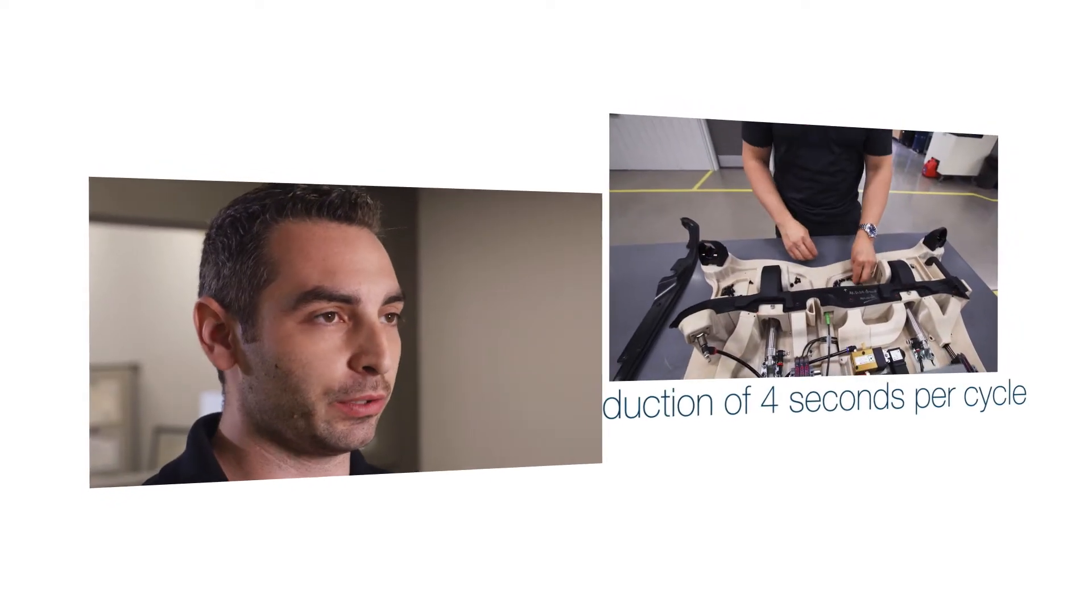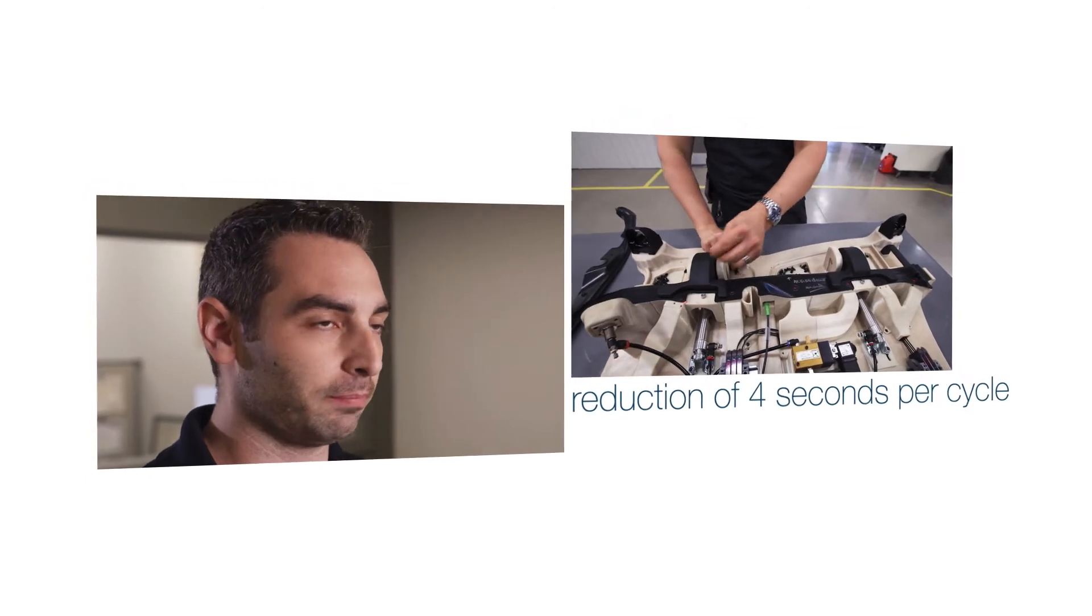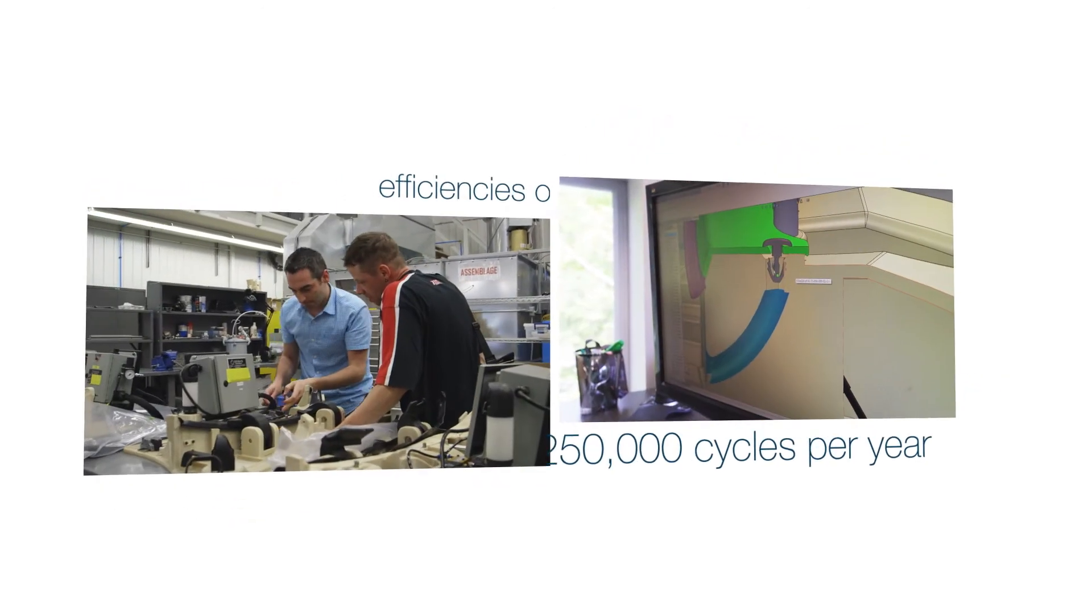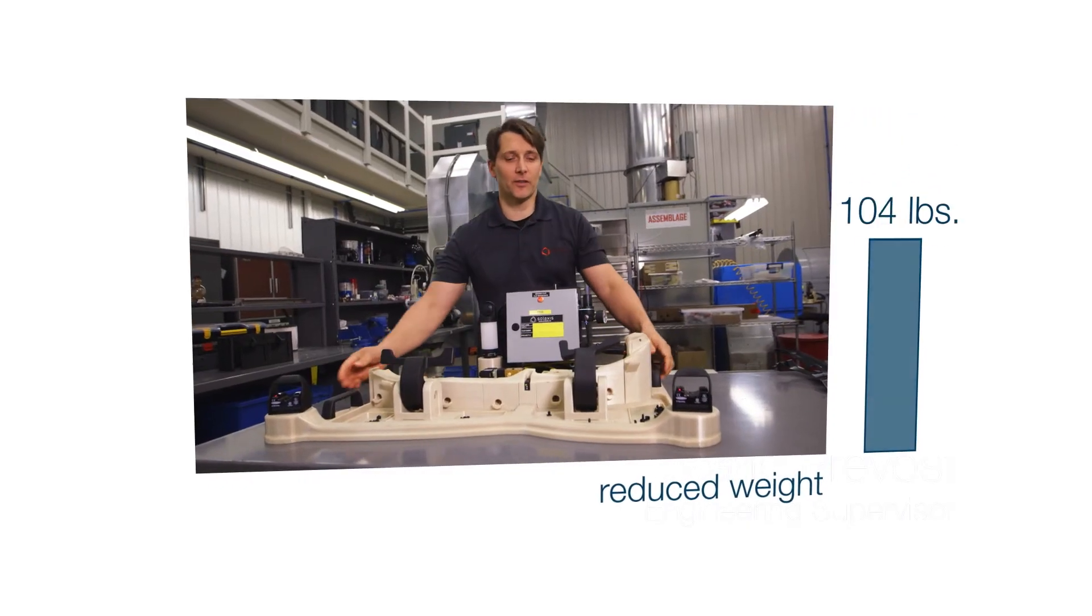The benefit for our customers of having the jig redesigned and modified helped us reduce their cycle time by four seconds per cycle, knowing that they're doing almost 250,000 parts per year. Also, having a plastic jig instead of a metal jig allows them to reduce the weight. So it's very lightweight, only about 28 pounds.